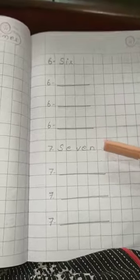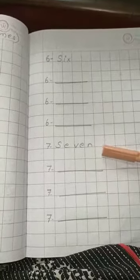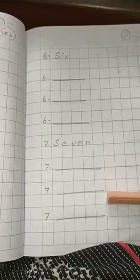At last, 7. S-E-V-E-N, 7. You have to write it down three times.